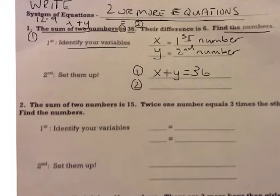Our second one comes from the second sentence here. It says their difference. Their is x and y. Difference means subtract. Is means equals. So x minus y equals 6. And that's it. That's all you have to do for that first set.